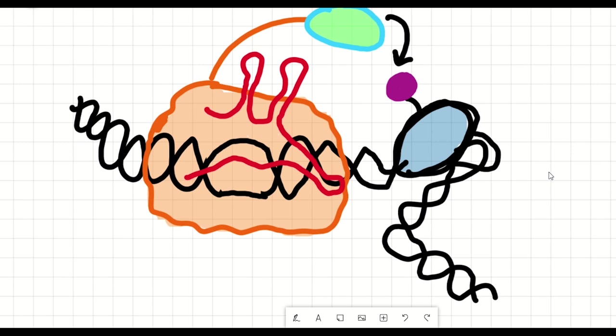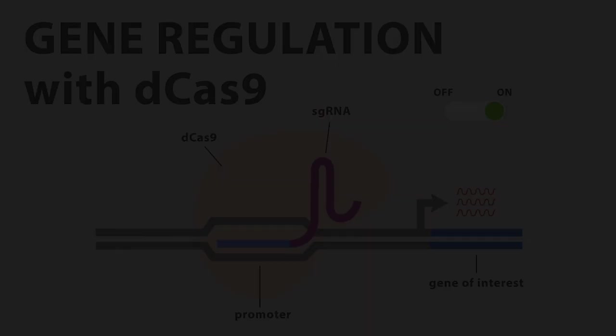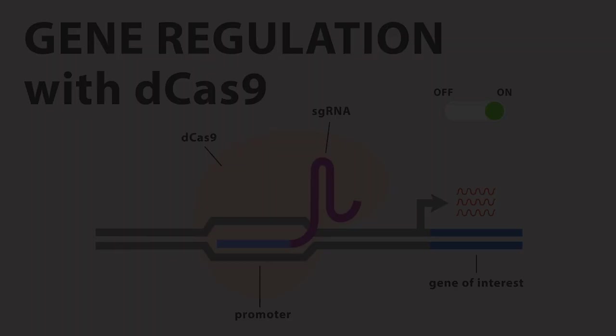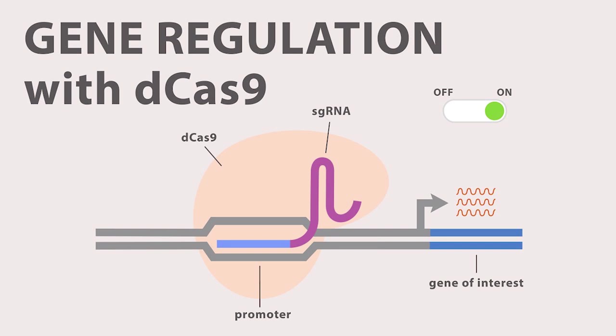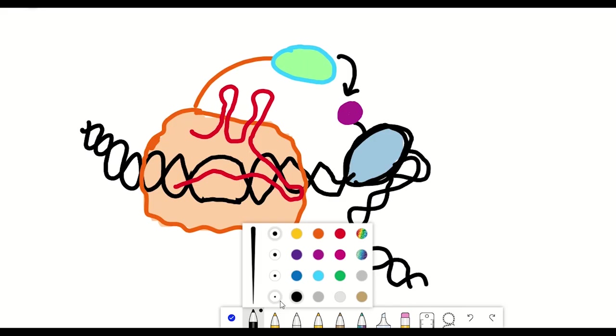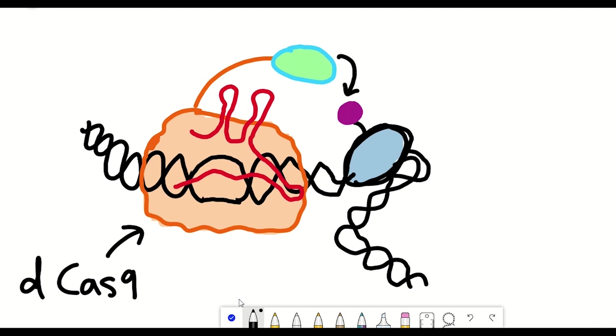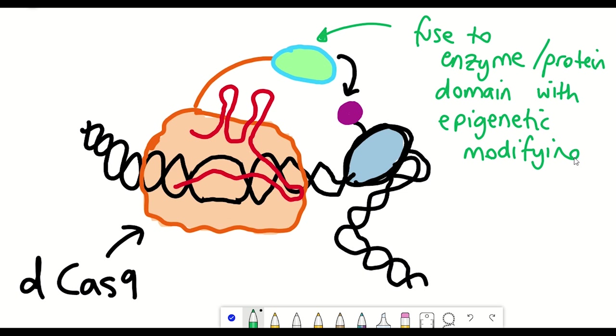So what a dead Cas9 refers to is a Cas9 protein that's been mutated such that it no longer cuts DNA. So you don't get any single-stranded or double-stranded breaks. And so that's good because we're no longer going to be manipulating the DNA sequence, but it retains that programmable DNA binding activity that enables the precision in epigenome editing. And so when it comes to being able to mediate epigenetic editing, all that effectively needs to be done is to fuse the Cas9 protein to different enzymatic domains that can either effectively write the epigenetic marks or erase the epigenetic marks.